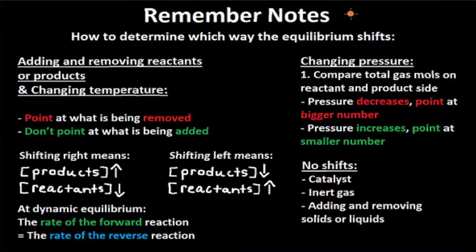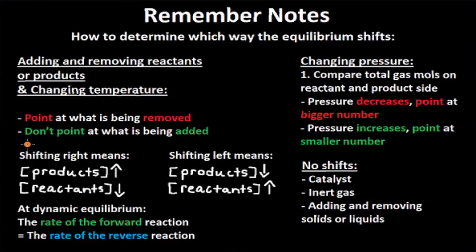These are remember notes — a summary of what you learned in this video. To determine which way the equilibrium shifts: for adding/removing reactants or products and changing temperature, point at what is being removed and don't point at what is being added. For pressure changes, compare total gas moles on each side — pressure decreases, point at the bigger number; pressure increases, point at the smaller number. It is opposite to what you would think. Catalysts, inert gas, and adding or removing solids or liquids cause no equilibrium shifts.